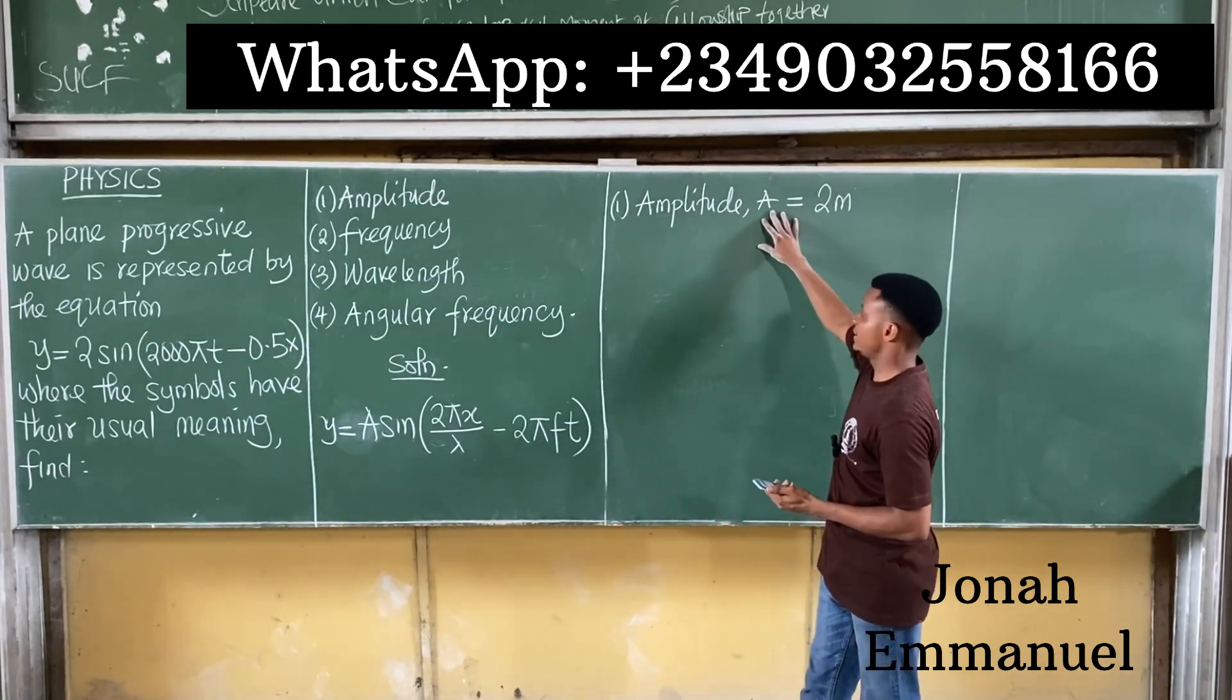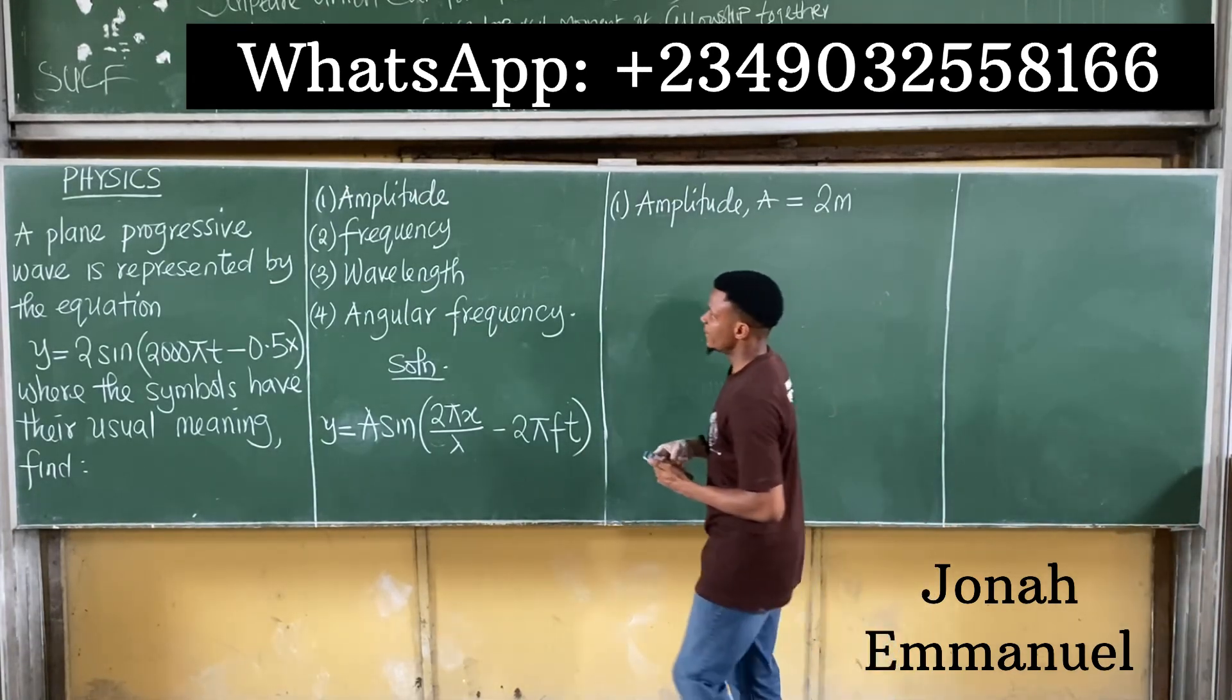That's 2 meters. Amplitude is simply the highest vertical distance that a wave particle can cover. So it becomes 2 meters. Number two, you have to find frequency.